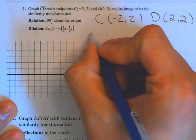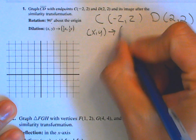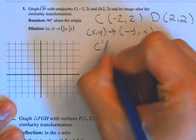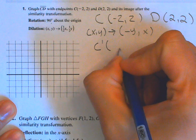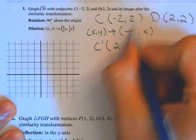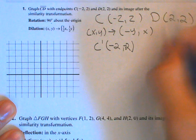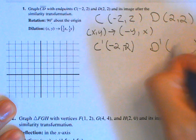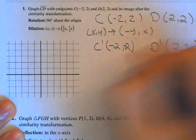For the 90-degree rotation, the rule is (negative y, x). So for C prime, we switch x and y but the y value turns into its opposite: C prime is (negative 2, negative 2). For D prime, similarly switching gives (negative 2, 2) — the y coordinate becomes negative and takes the place of x.